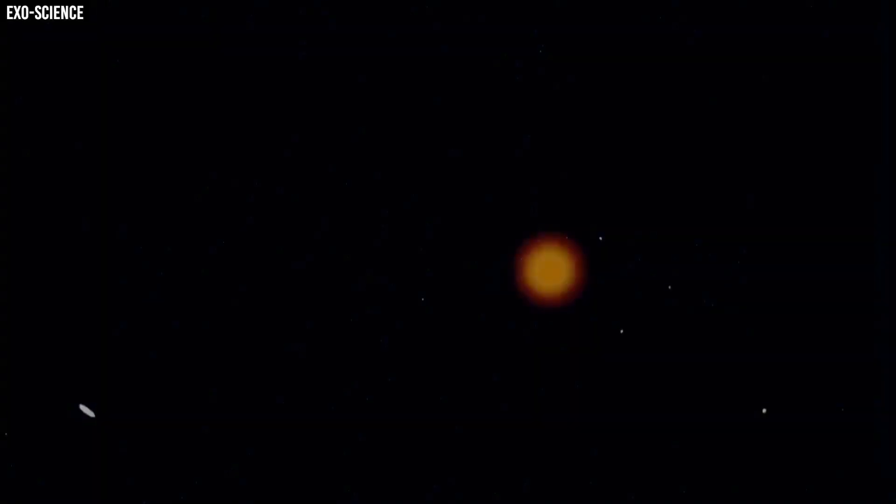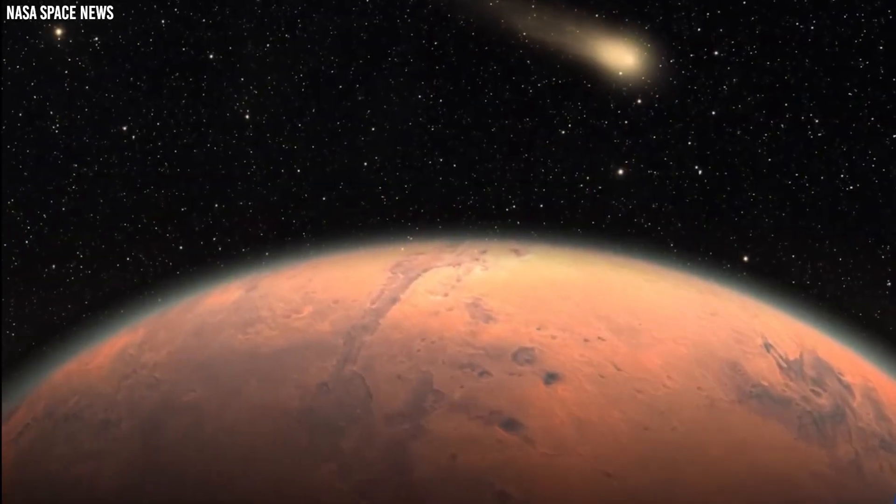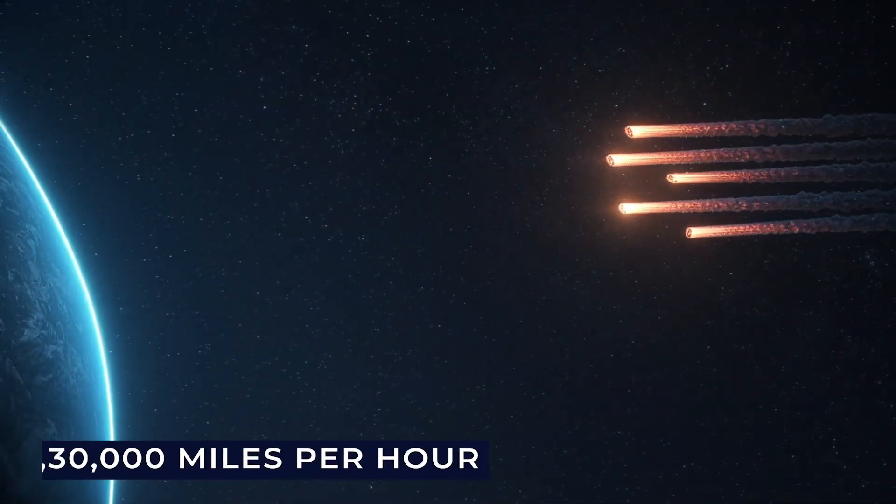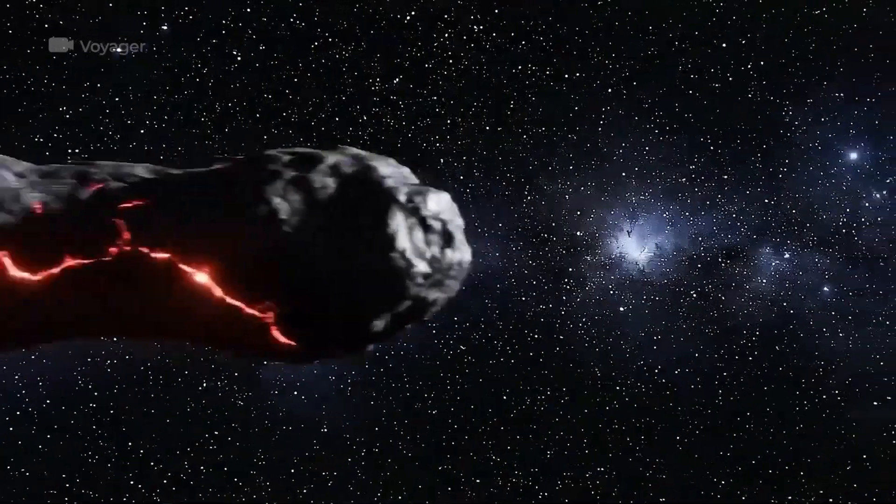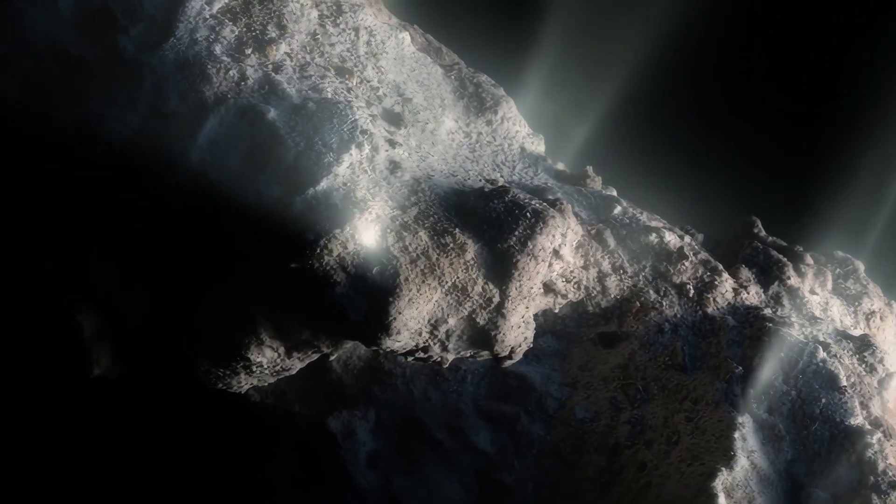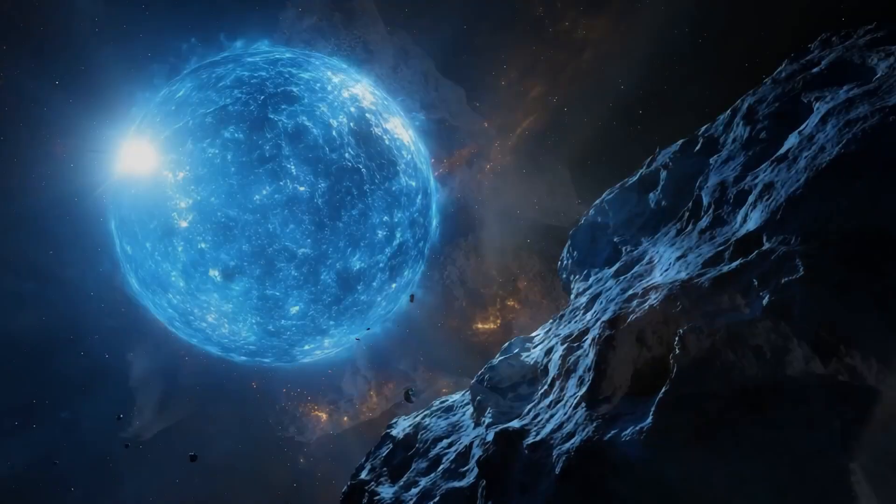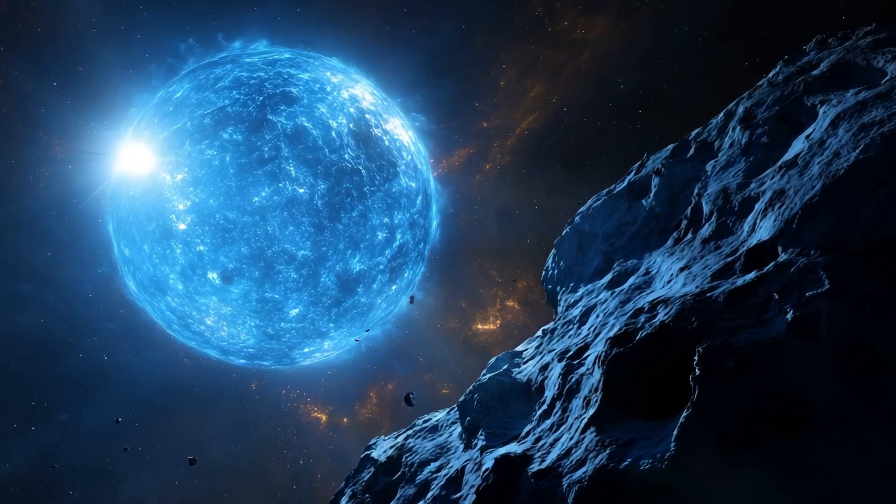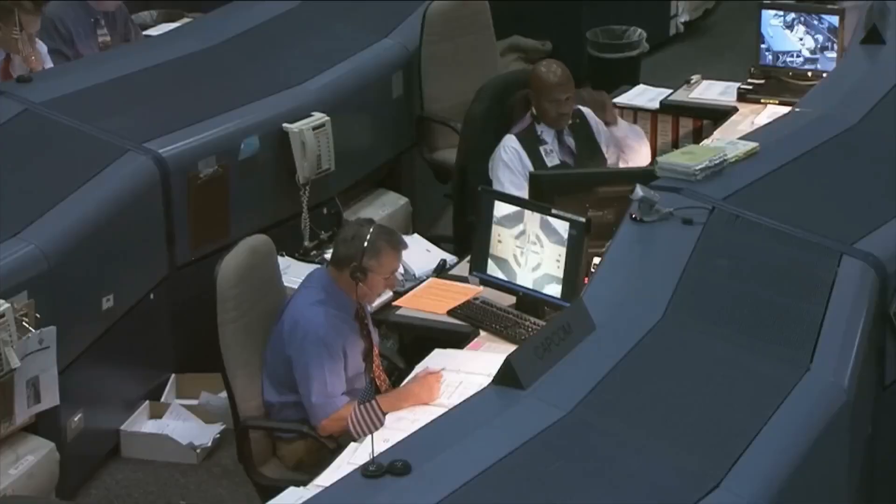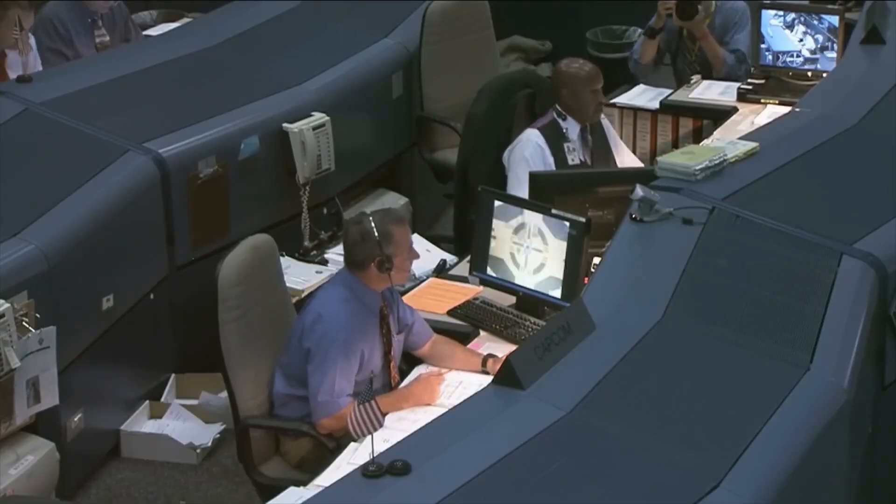But Loeb believes the ultimate turning point is near. In the coming days, 3i Atlas will encounter Jupiter, the largest and most volatile gravitational presence in our solar system apart from the Sun. If it truly is a constructed object, this will be its most defining test. To survive Jupiter's immense pull, it would need to recalibrate its thrust. That means, if Loeb's theory is correct, another color shift will occur.